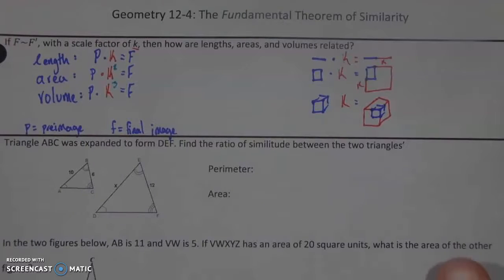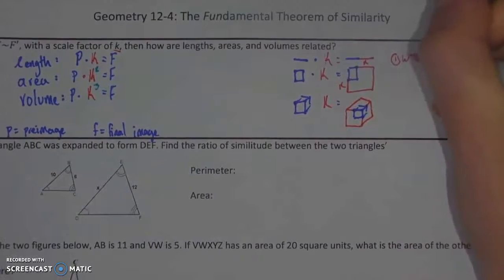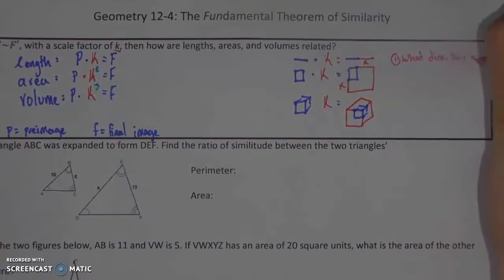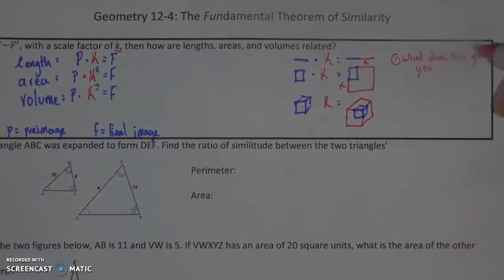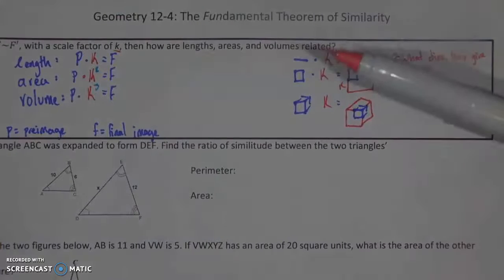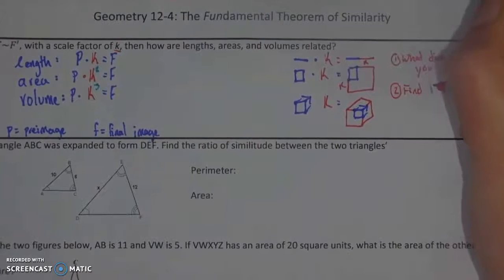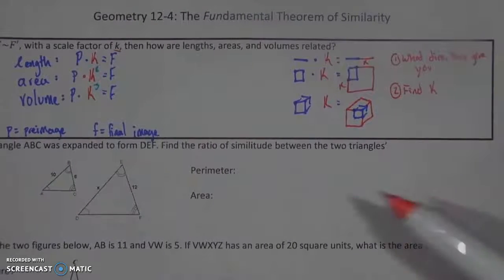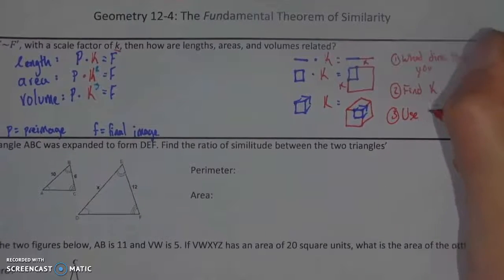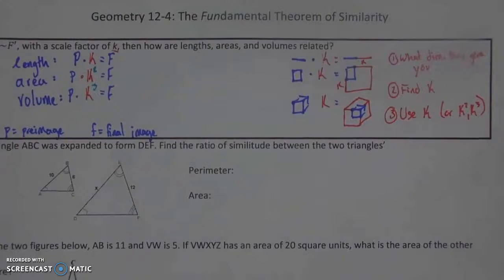And that's really how I always remember it. When you're doing this, I want you guys to pay attention to three steps. The first thing that you need to do is you need to recognize what dimension they give you. Because they can start by giving you a k to the third if we're talking about the relation of volumes. The next thing that you're going to have to do is you're going to have to find k. Don't try to jump from k cubed to k squared. You have to go back to k. And then you can then use your k each time, or your k squared, k cubed.